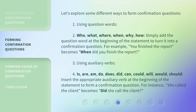2. Using auxiliary verbs: is, are, am, do, does, did, can, could, will, would, should. Insert the appropriate auxiliary verb at the beginning of the statement to form a confirmation question. For instance, 'she called the client' becomes 'did she call the client?'